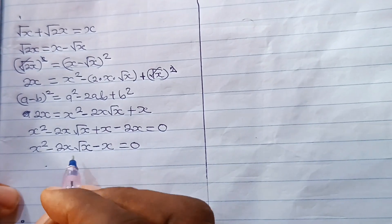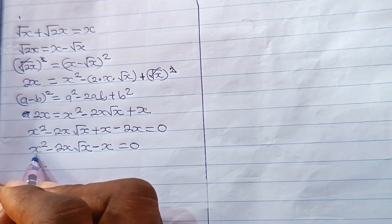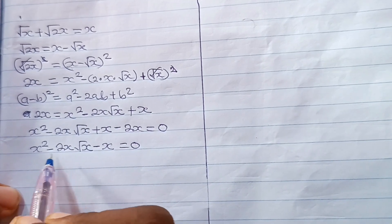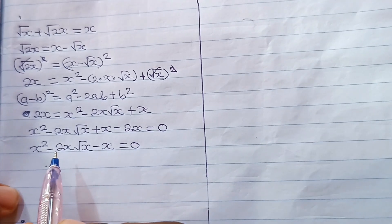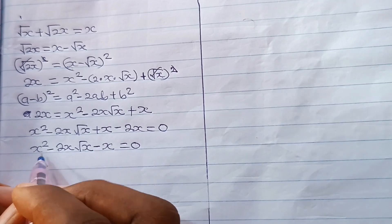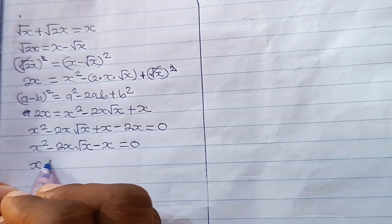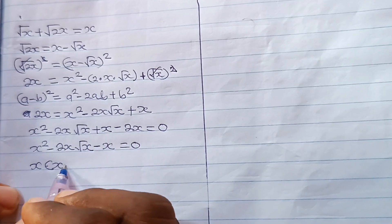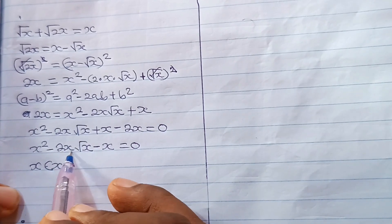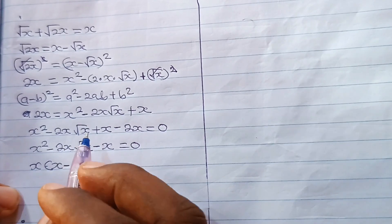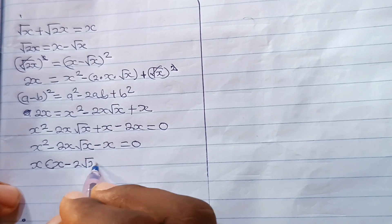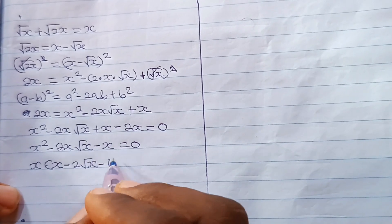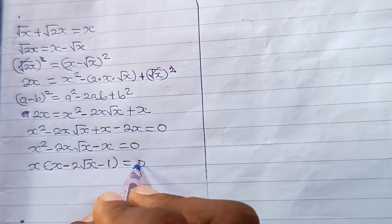Now I want to factorize x out so that we can simplify this equation. When we factorize x out: x squared divided by x gives us x; 2x root x divided by x gives us 2 root x; and minus x divided by x gives us minus 1, equal to 0.